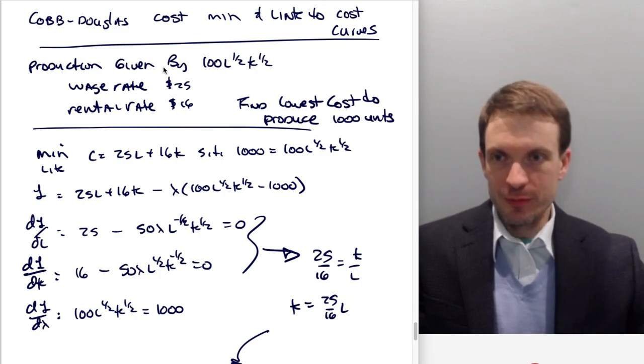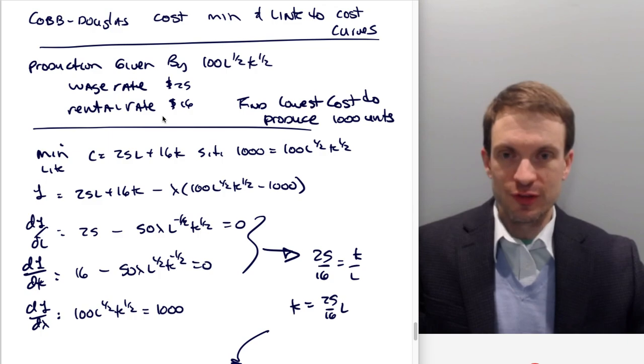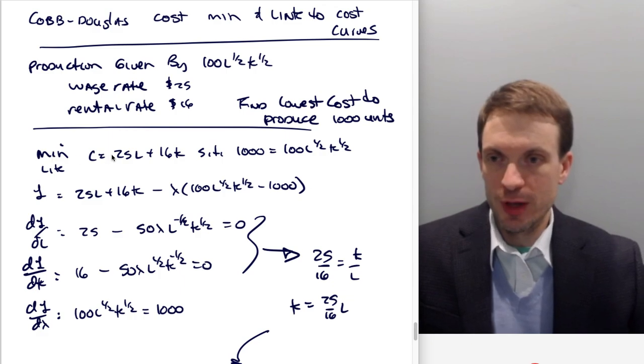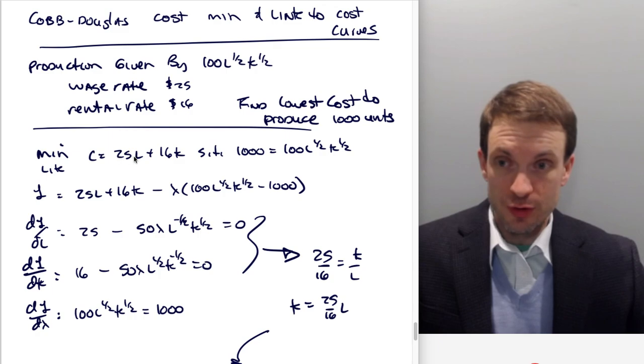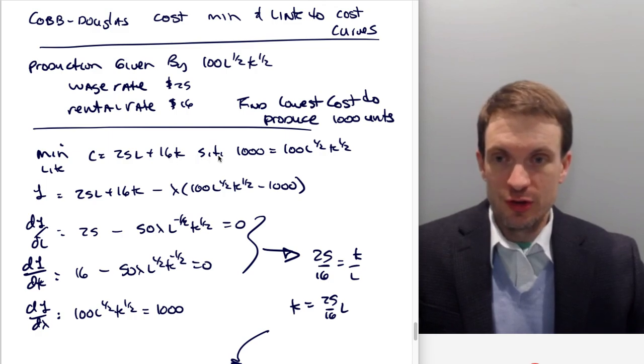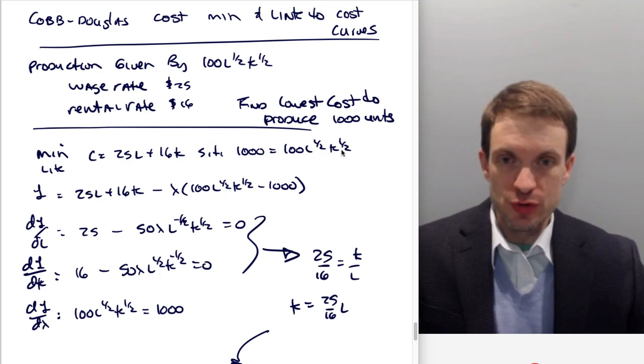Assume we have the following production technology given by 100 L to the half K to the half, with a wage rate of 25 and rental rate of 16. We want to find the lowest cost to produce 1000 units. Here's my cost minimization problem. I'm going to minimize by choosing the optimal level of labor and capital. What I'm trying to minimize is my costs, which are 25 times L plus 16 times K, subject to the constraint that we get 1000 units of output using this production technology.